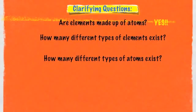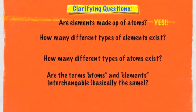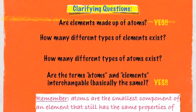How many different types of atoms exist? You look at the same chart, because not only does each tile or box on this chart represent elements, they also represent different types of atoms. For example, you have the element hydrogen and helium in that first row — those are also different types of atoms. So, are the terms atoms and elements interchangeable? Yes, but you have to remember that atoms are actually the smallest component of that element.